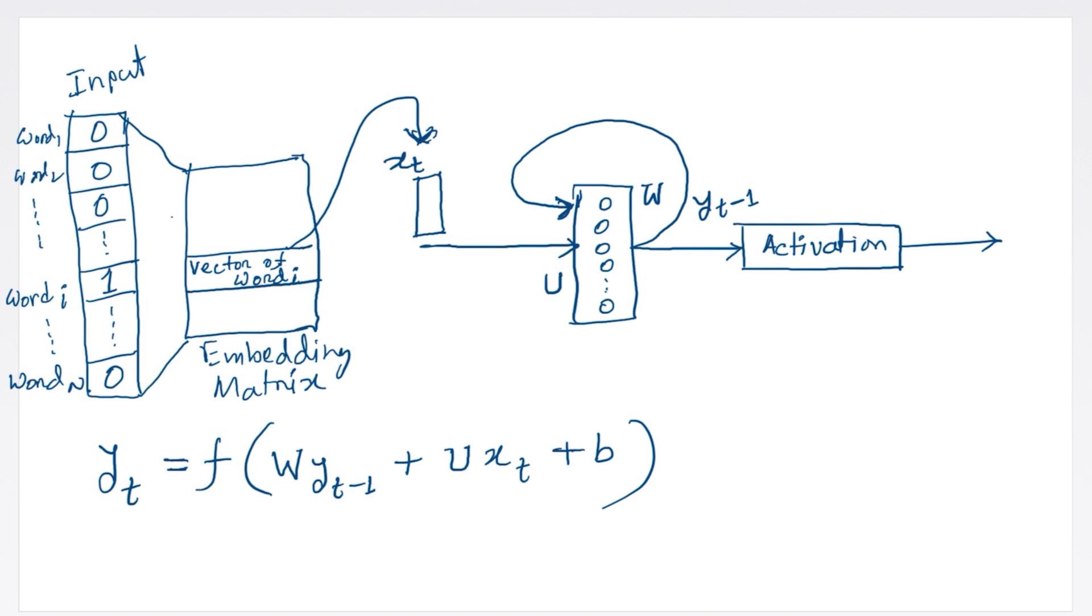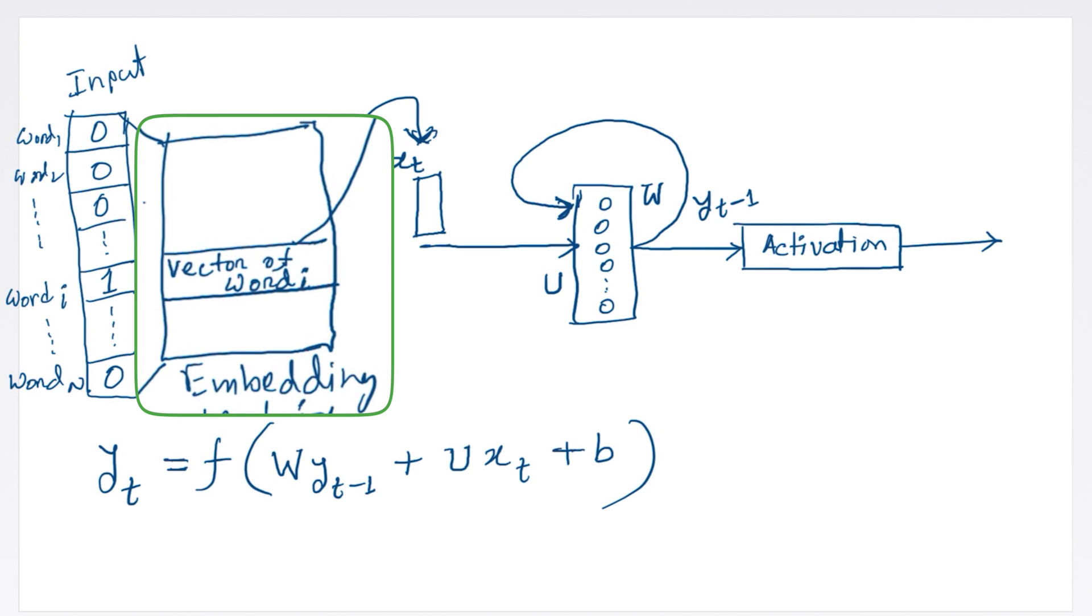The embeddings in the embedding layer will be updated during the backpropagation process of an RNN, provided that the embedding layer is set to be trainable. When the RNN is trained on a task, such as language modelling or text classification, the gradients calculated during backpropagation are used not only to update the weights and biases of the RNN, but also to adjust the embeddings in the embedding layer.